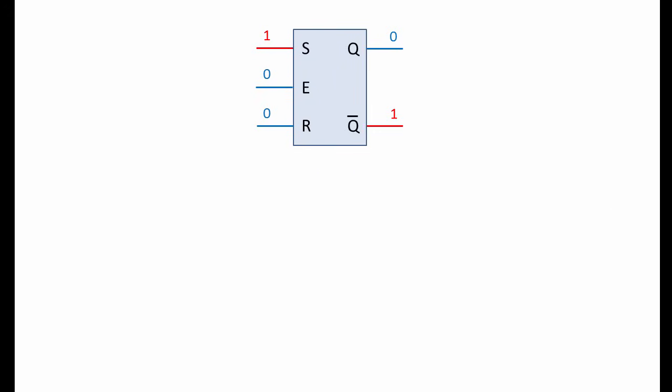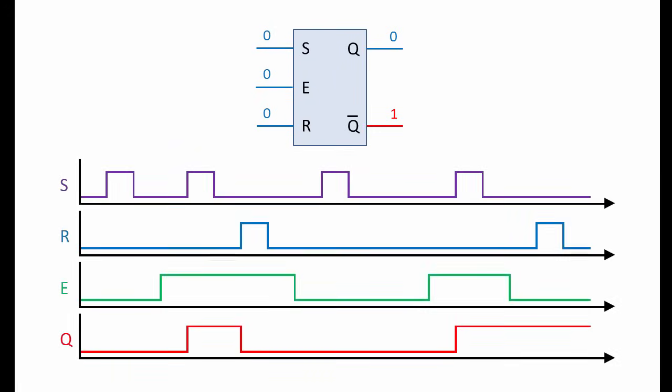Now let's examine what happens when E varies. You can see that some of the time E is high, and some of the time E is low. We begin with an output of zero at Q, and because E is low, the latch is disabled.